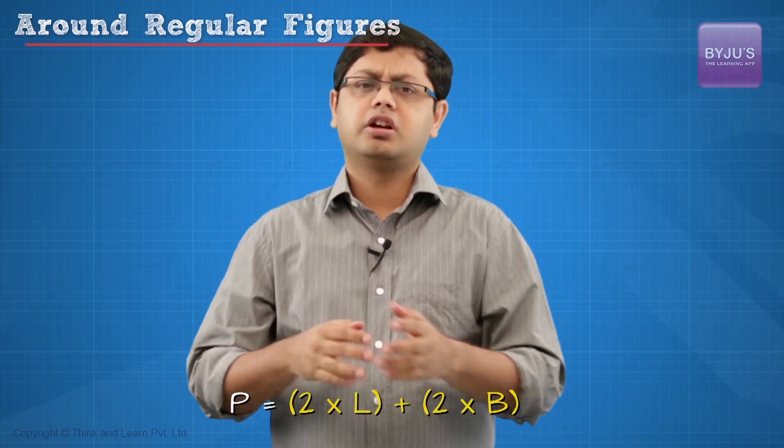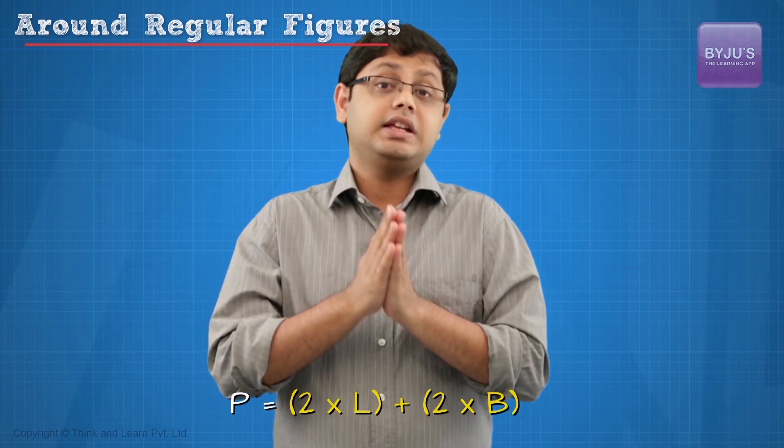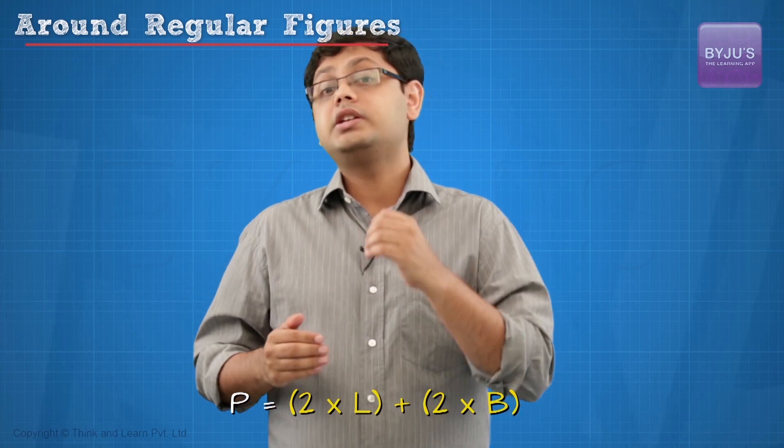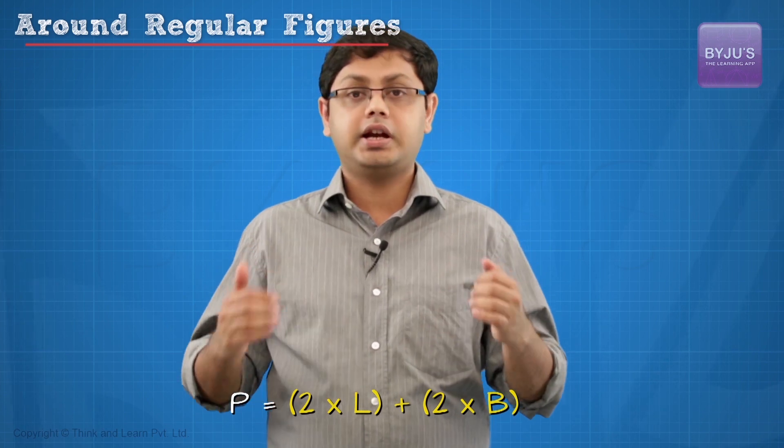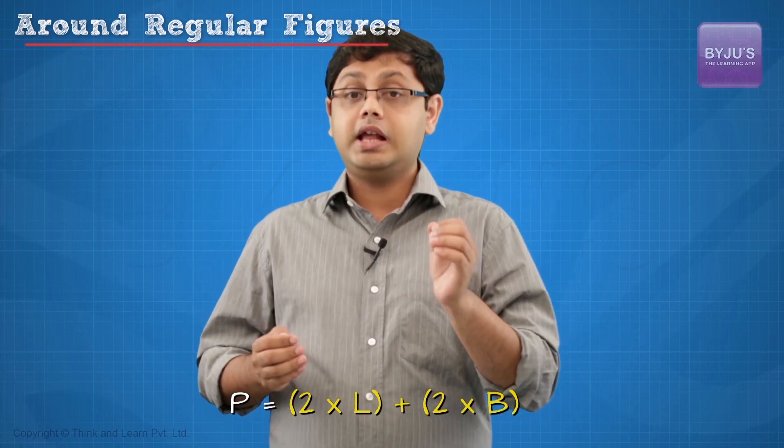You may have a question here. You may ask me, why do I actually need a formula to do something as simple as just adding these numbers up? Well, the answer is, if somebody tells you the length and breadth of a rectangle, you can quickly pull out this formula, plug in values and you will get the perimeter. It just makes your life simpler.